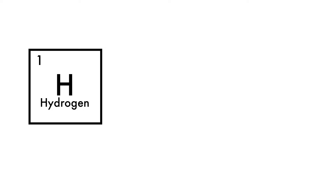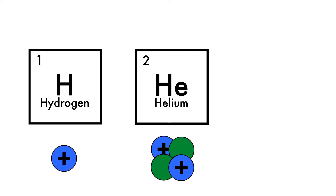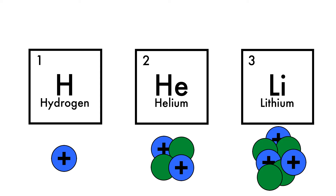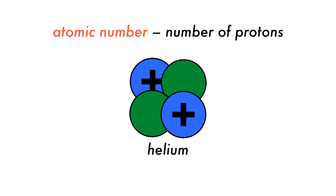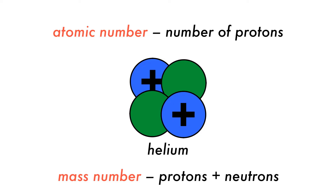The particle that determines an atom's identity is the number of protons. One proton means hydrogen, two means helium, three means lithium, and so on. We have a special name for the number of protons — we call it the atomic number. The atomic number lists the number of protons, but another important number is the mass number, which is the number of protons plus neutrons.